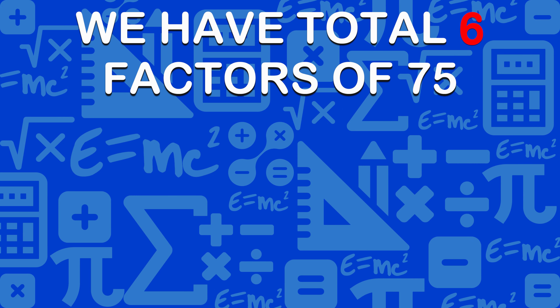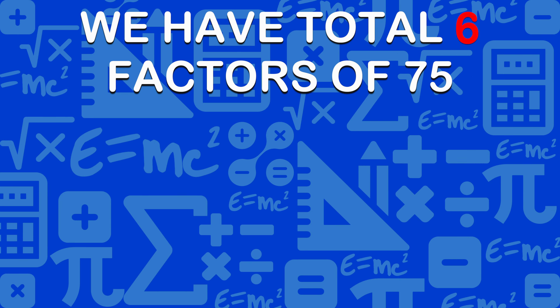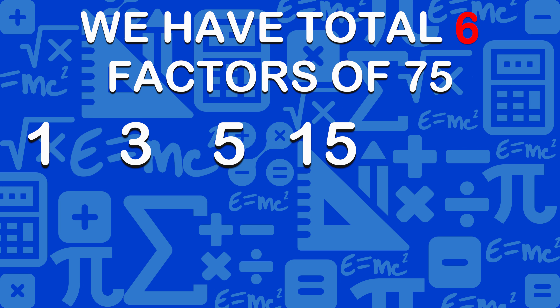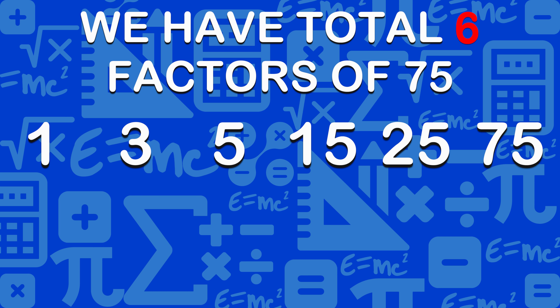We have a total of 6 factors of 75: 1, 3, 5, 15, 25, and 75.